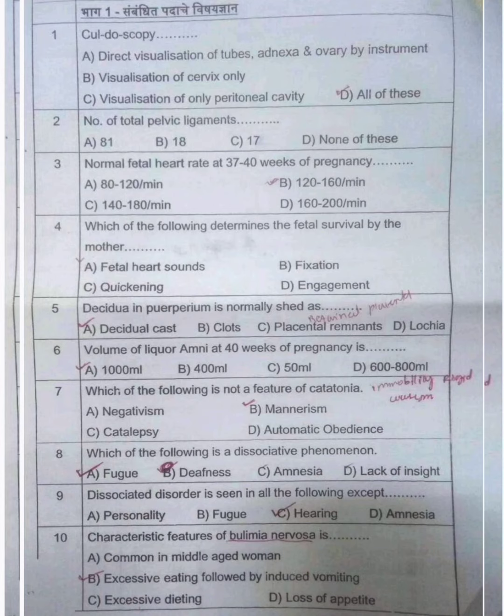Second question: number of total pelvic ligaments. Broadly categorized there are 3, but the total is 5. So the answer is none of these, because the options given are 8, 18, and 17 — none of which are correct. So the answer is none of these.